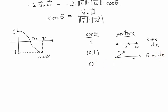If you get 0, in that case, theta must be pi over 2, the angle between your vectors is a right angle.